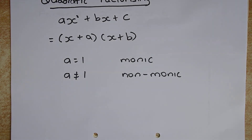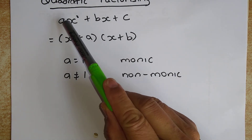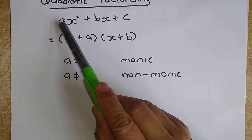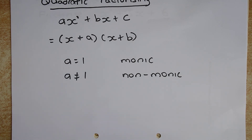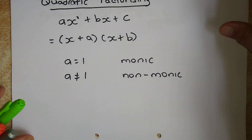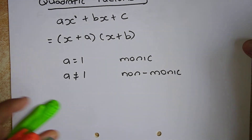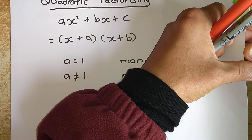We are going to do two types of examples. The first one is when a equals 1, so there will be x squared plus another number. This is called monic factorizing. The second type is when a is not equal to 1 — a could be any number more than 1 — and it is called non-monic factorizing. We shall look at some examples now.